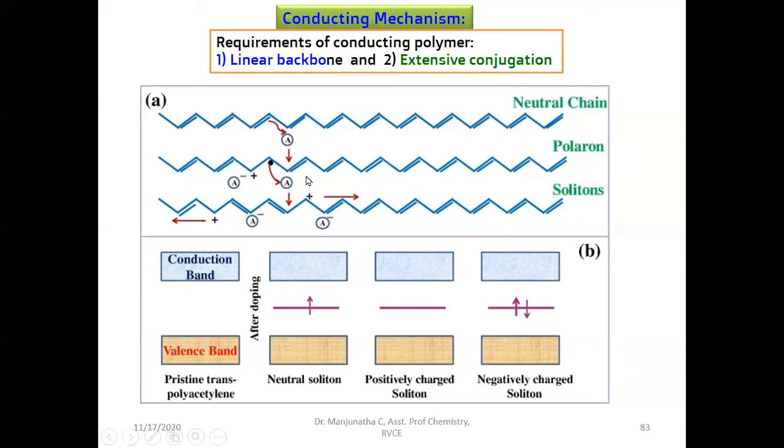If one more acceptor is added to that system, that again takes out that electron from this and creates a positive charge. Because of the presence of two electrons, after adding this, it forms a pi bond here.